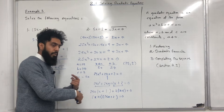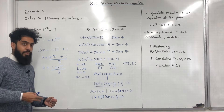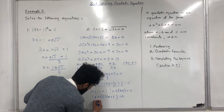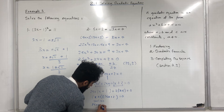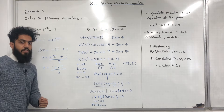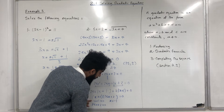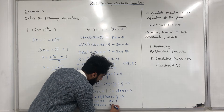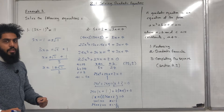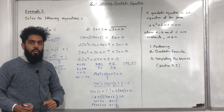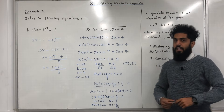Now I set the two brackets equal to 0. From X + 1 = 0, the solution is X = -1. From 25X + 2 = 0, the solution is X = -2/25. So this equation has two solutions: X = -1 and X = -2/25. If you found this video useful, please don't forget to subscribe.